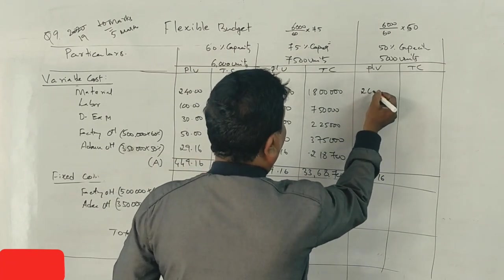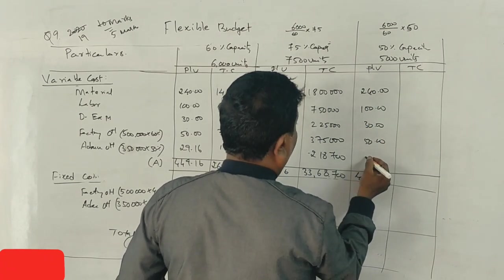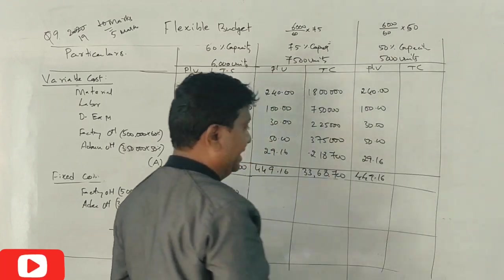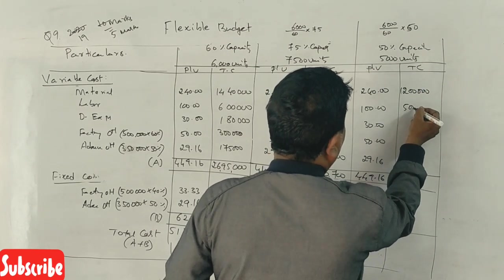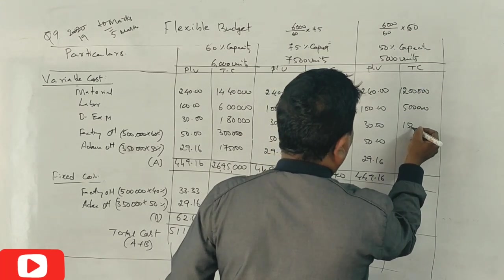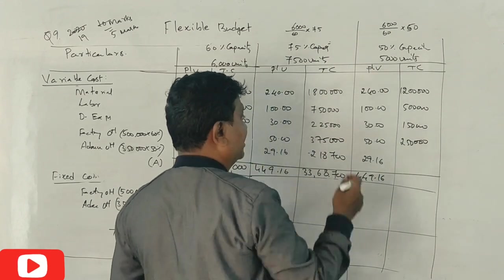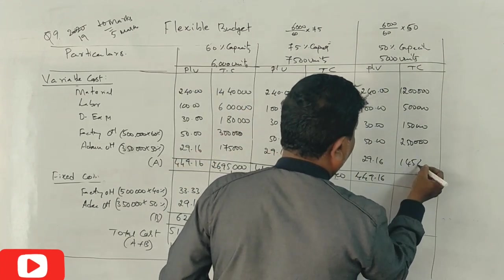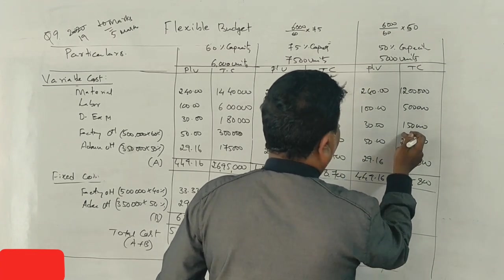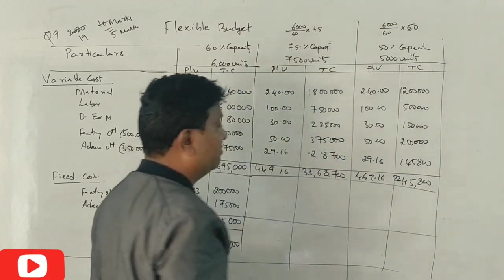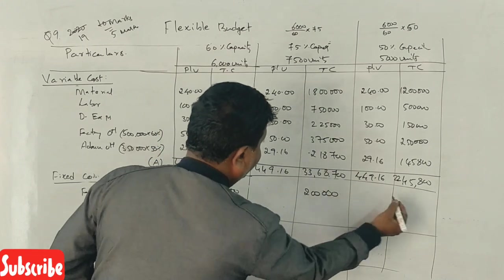At 50% capacity with 5,000 units: Material 240 into 5,000 equals 12 lakhs, labor 5 lakhs, direct expenses 1 lakh 50,000, factory overhead 2 lakhs 50,000, administration 29.16 into 5,000 equals 1 lakh 45,800. Total variable cost 22 lakhs 45,800. Per unit is different but total cost is the same.